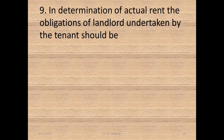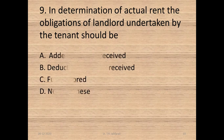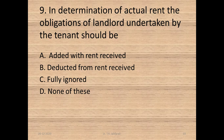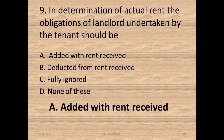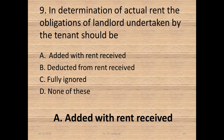Question 9: In determination of actual rent, the obligations of landlord undertaken by the tenant should be — A. Added with rent received, B. Deducted from rent received, C. Fully ignored, D. None of these. Option A: Added with rent received.